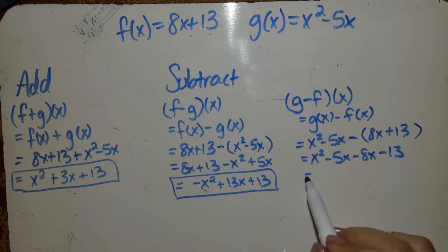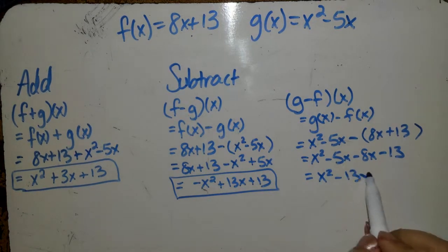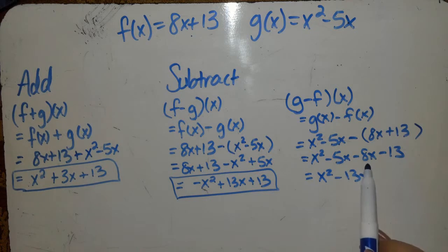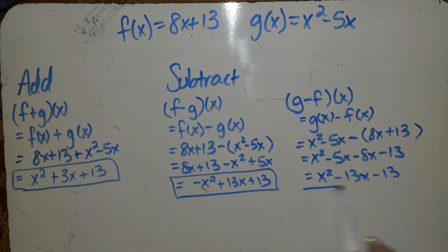Now you can combine like terms, so you get x squared minus 13x, so it's negative 5x, negative 8x, gives me negative 13x, minus 13.